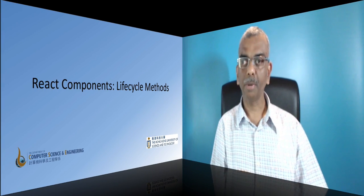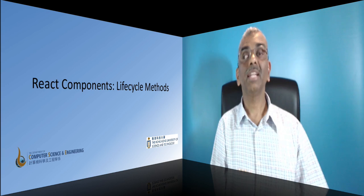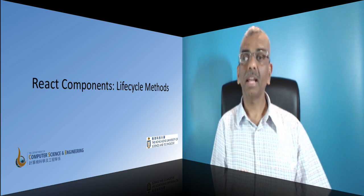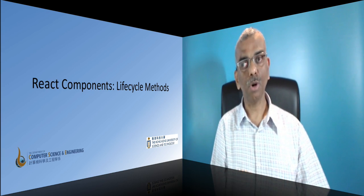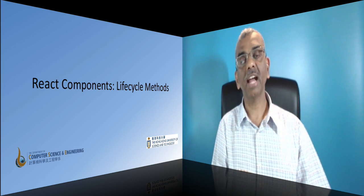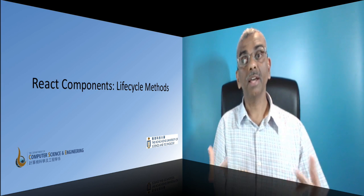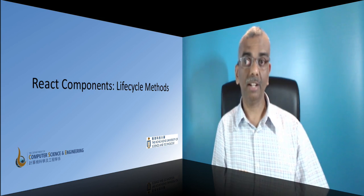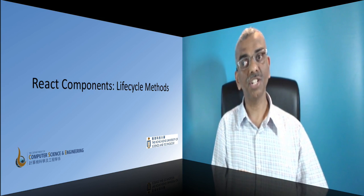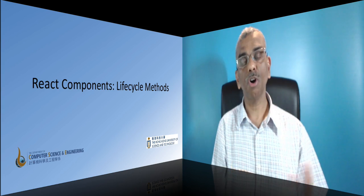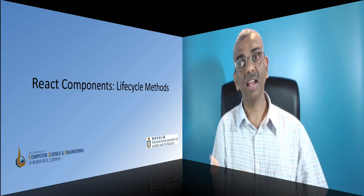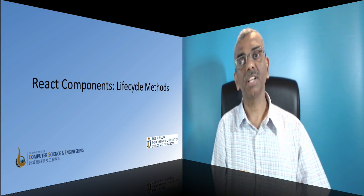In the previous lesson, I had briefly introduced you to the lifecycle methods of React components. We had already examined the lifecycle methods that are invoked when the component gets mounted. So when we were looking at the React application example in the previous lesson, the component was just getting mounted at that point. Now we have two components: the menu component and the dish detail component. And you see that when you click on any of the menu items, the dish detail component gets re-rendered with the new details of the selected dish.